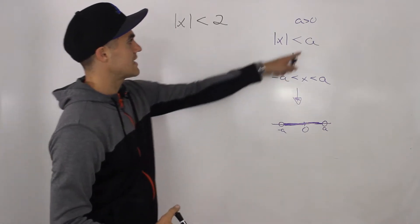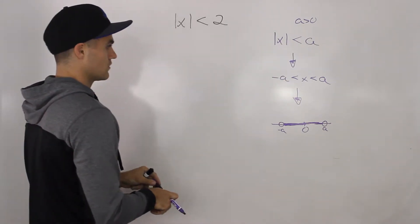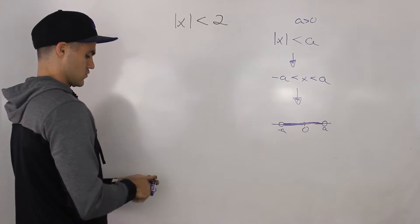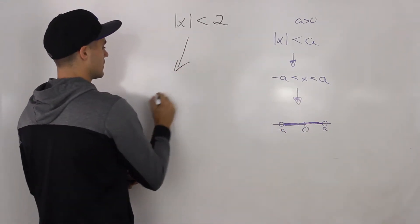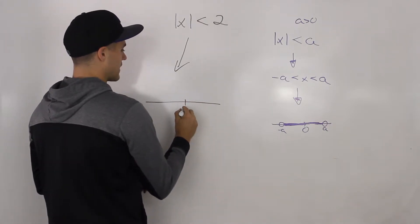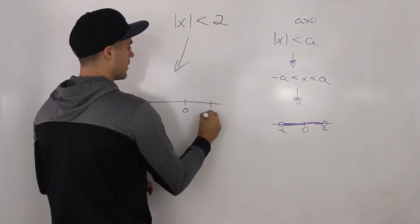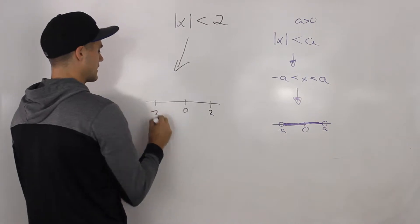In this case, the a value is 2, so the number line would look like this. Basically, it's all the x values between negative 2 and positive 2.